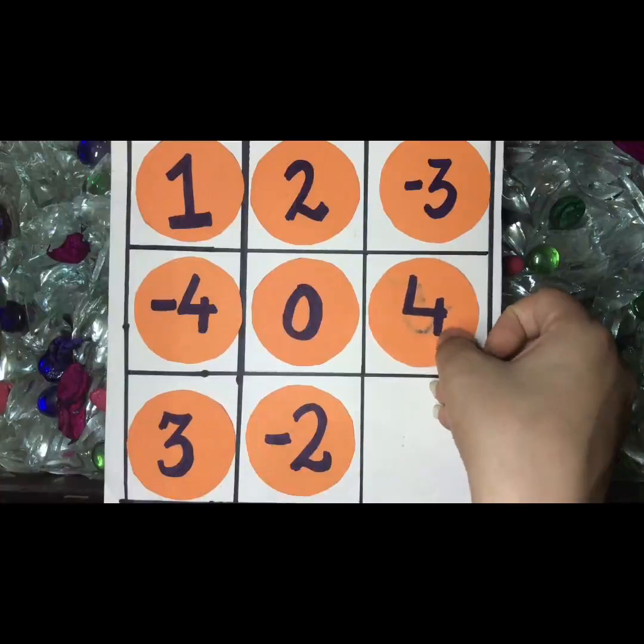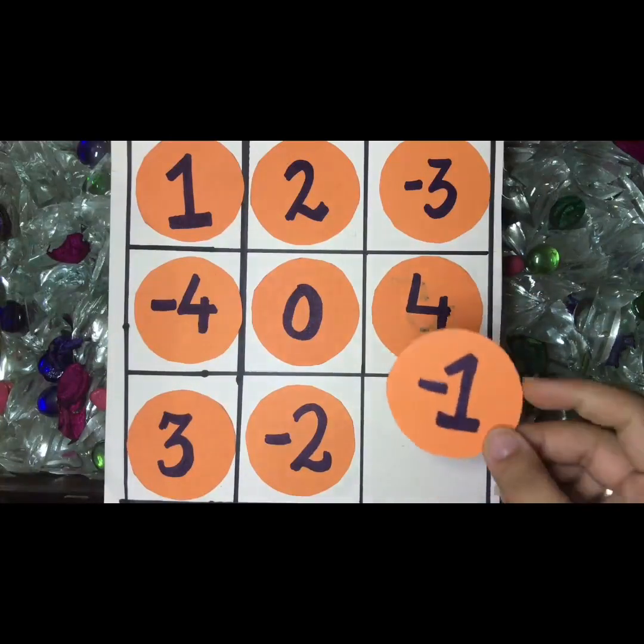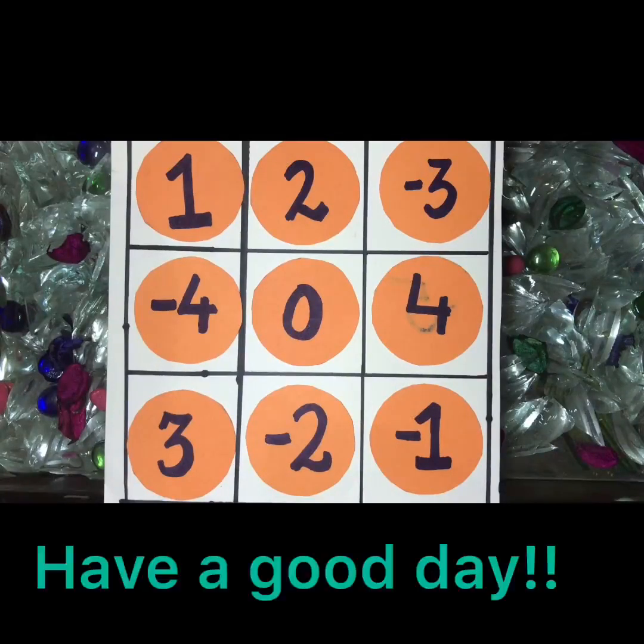Now I use minus 3 plus 1, and using minus 1 the answer of this row becomes 0. Similarly, you can try your own and get the answers of all the rows the same. I hope you enjoyed it. Have a good day!